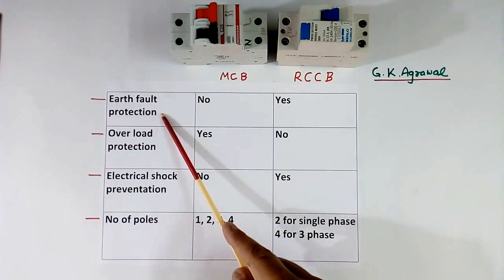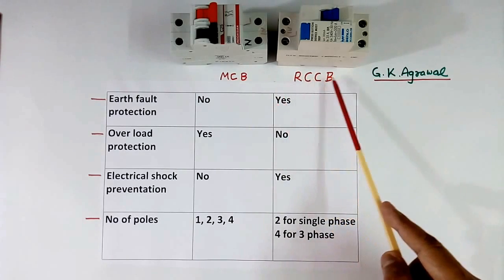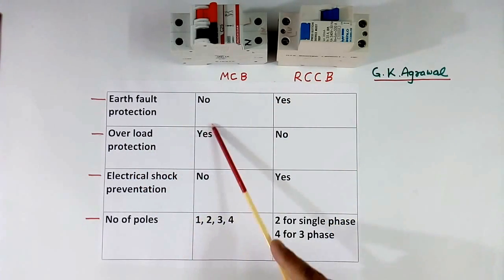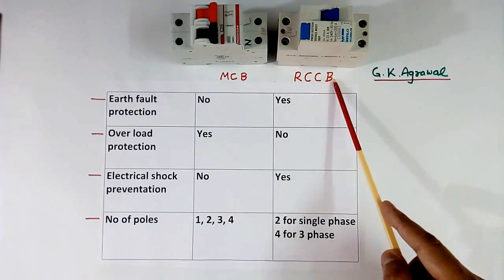Earth fault protection: no in MCB. Yes in RCCB. Overload protection: is available in MCB but not available in RCCB.